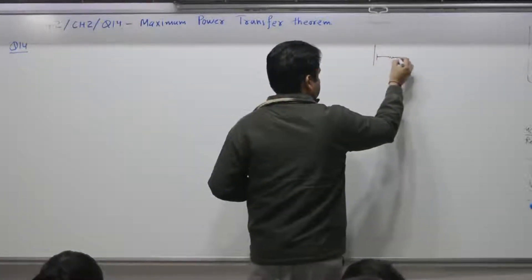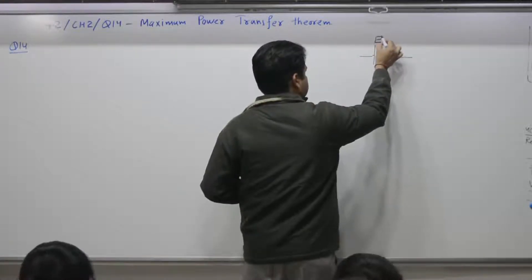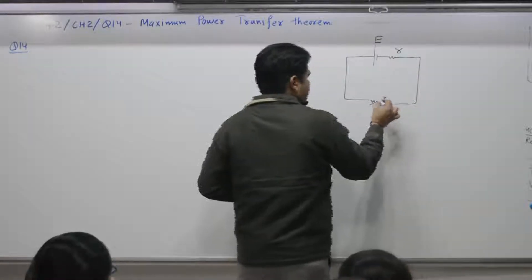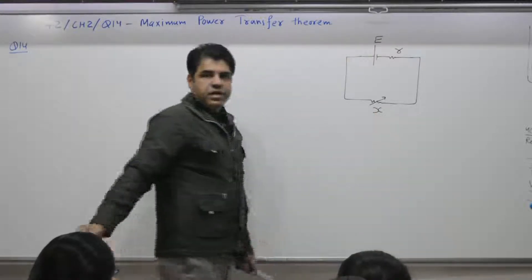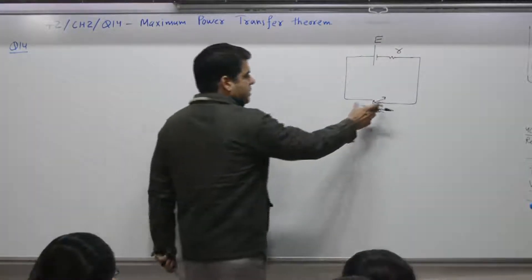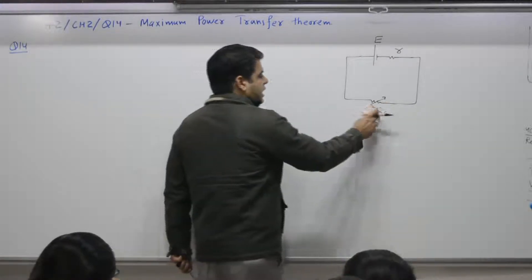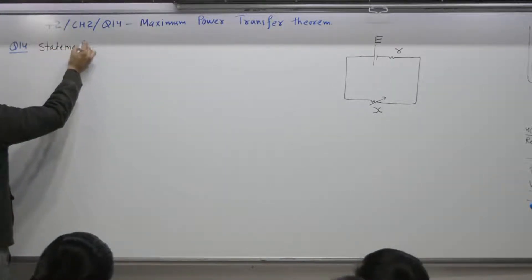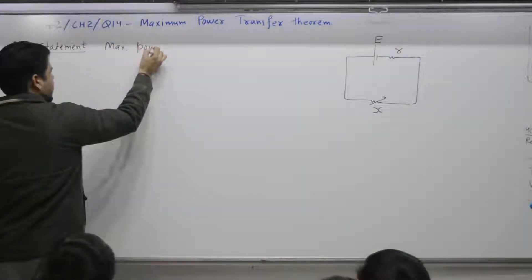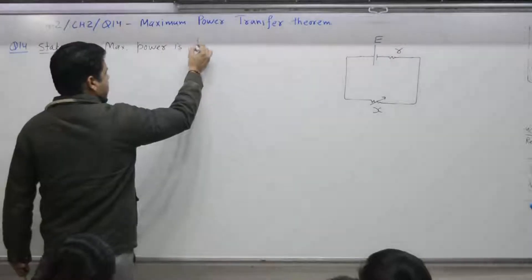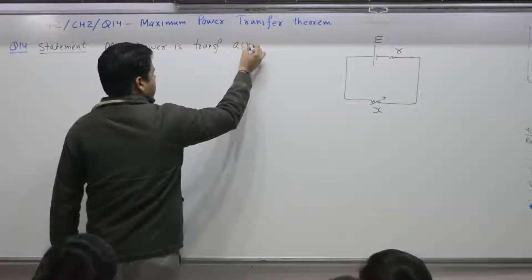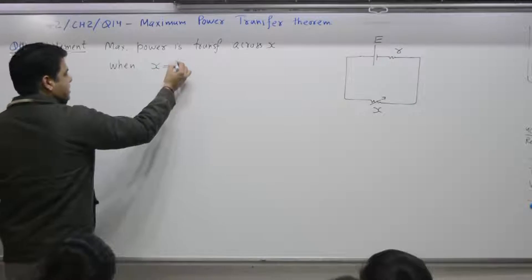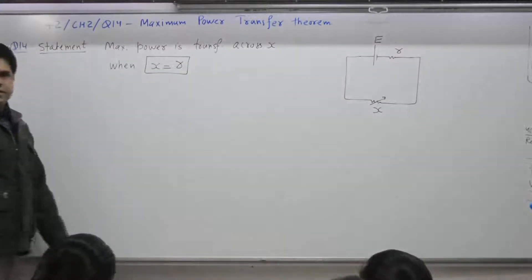If there is a cell of EMF E and internal resistance R, and you connect an external resistance — say a variable resistance X — maximum power will be transferred across X when X is equal to R. This is the statement: maximum power is transferred across X when external resistance X is equal to internal resistance R.